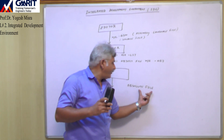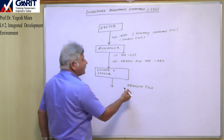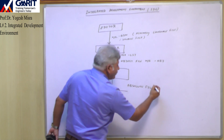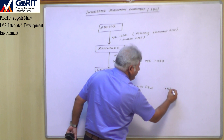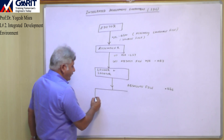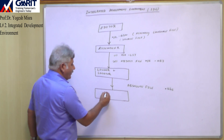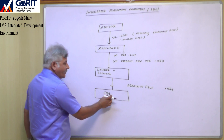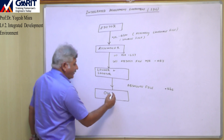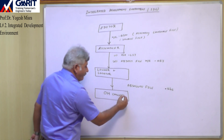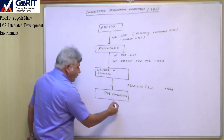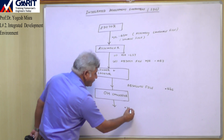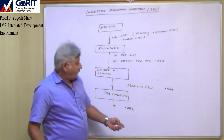In this way we get the absolute file with the extension .abs. This absolute file is then given to another tool called the OH converter — Object to Hexadecimal converter.